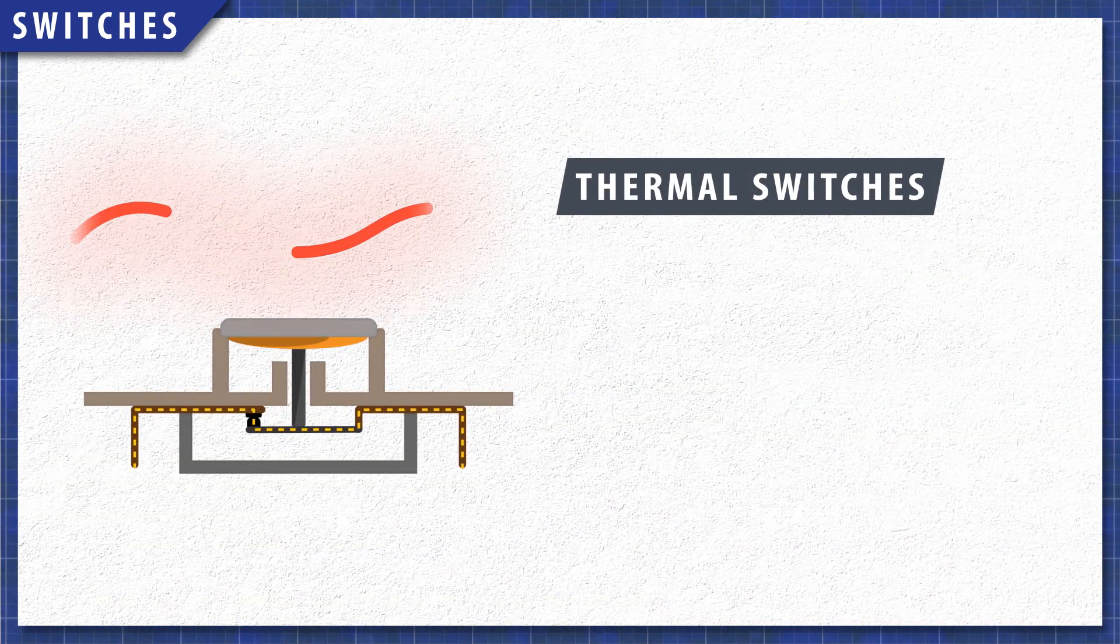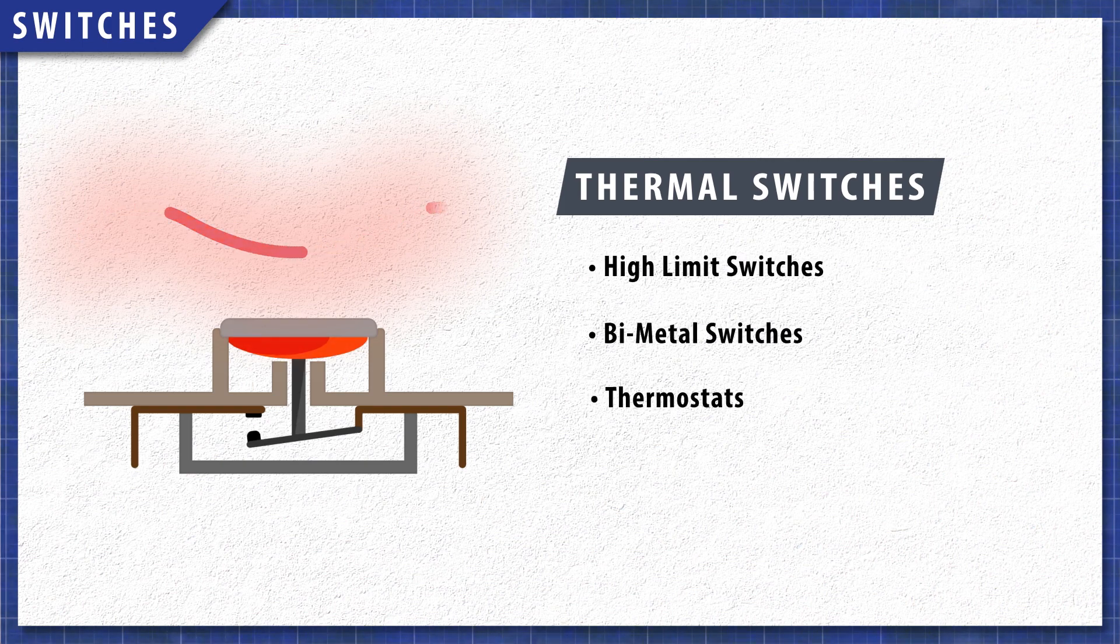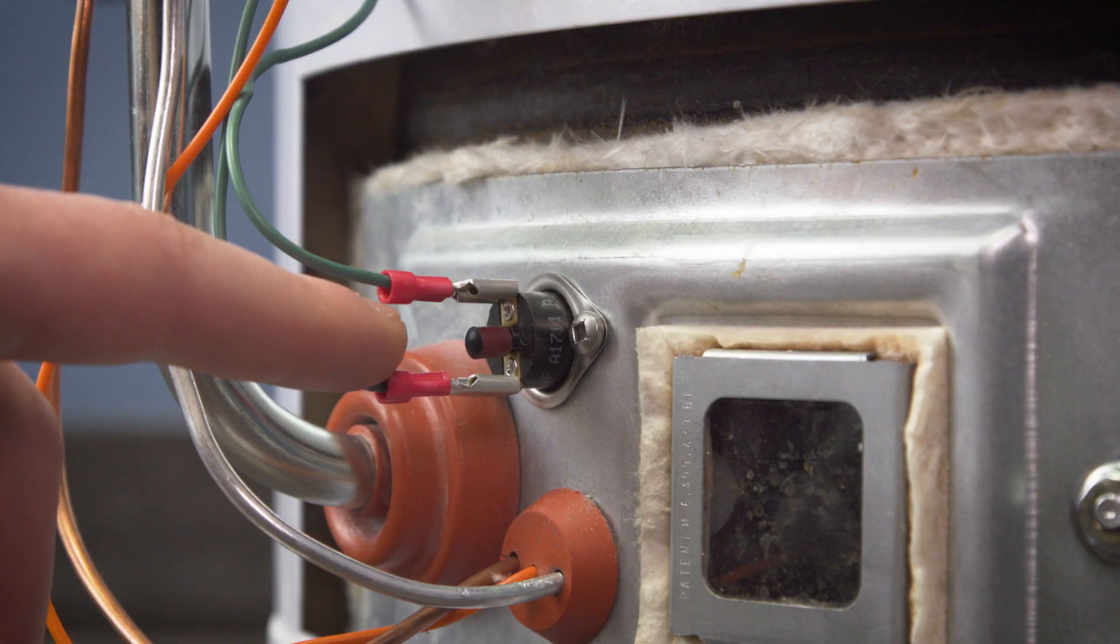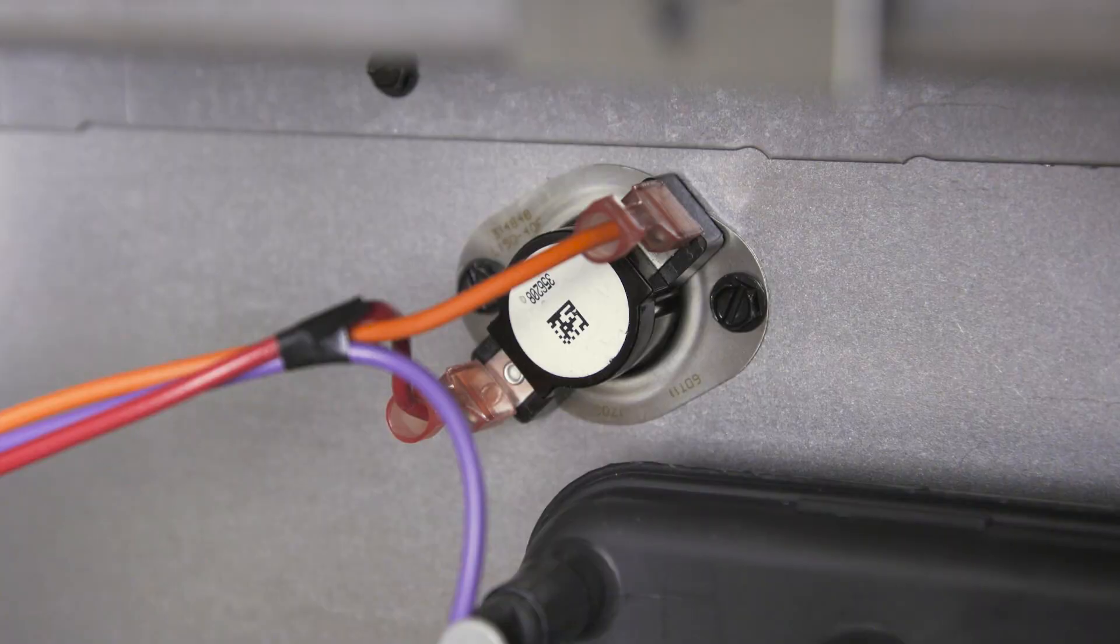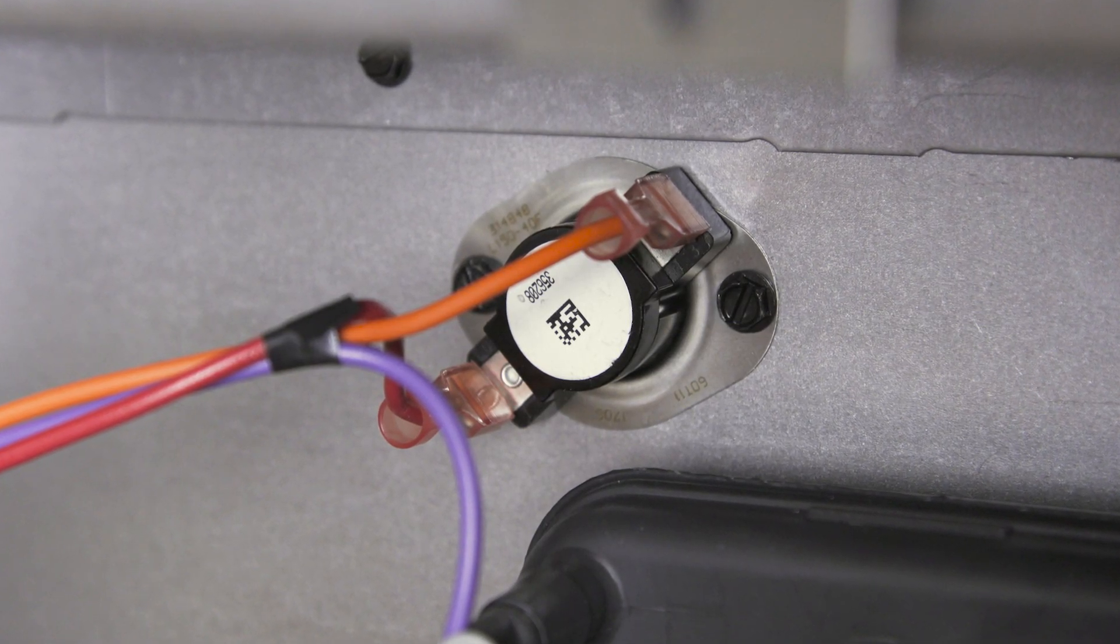Thermal switches respond to heat and will disconnect power at a set temperature. In some cases, these are called high limit switches, bi-metal switches, or thermostats. Some switches will reset automatically, and others will use a reset button. These are commonly found in furnaces, dryers, and water heaters.